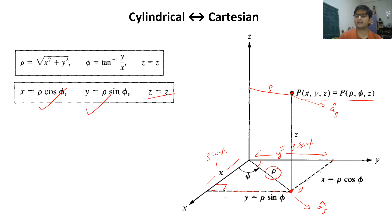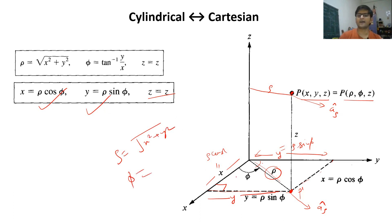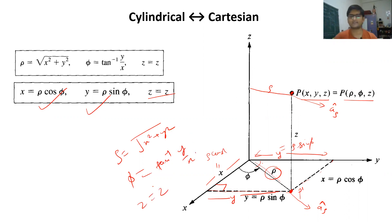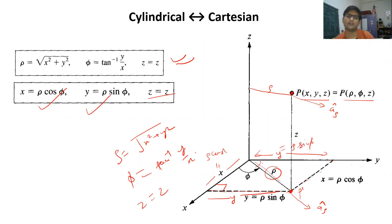Conversely, since it is a right triangle with legs x and y and hypotenuse rho, we get rho = √(x² + y²). The angle phi is given by phi = tan⁻¹(y/x). And since z is the same in both systems, z remains z. Using these two sets of formulas, you can convert any point between Cartesian and cylindrical coordinates.